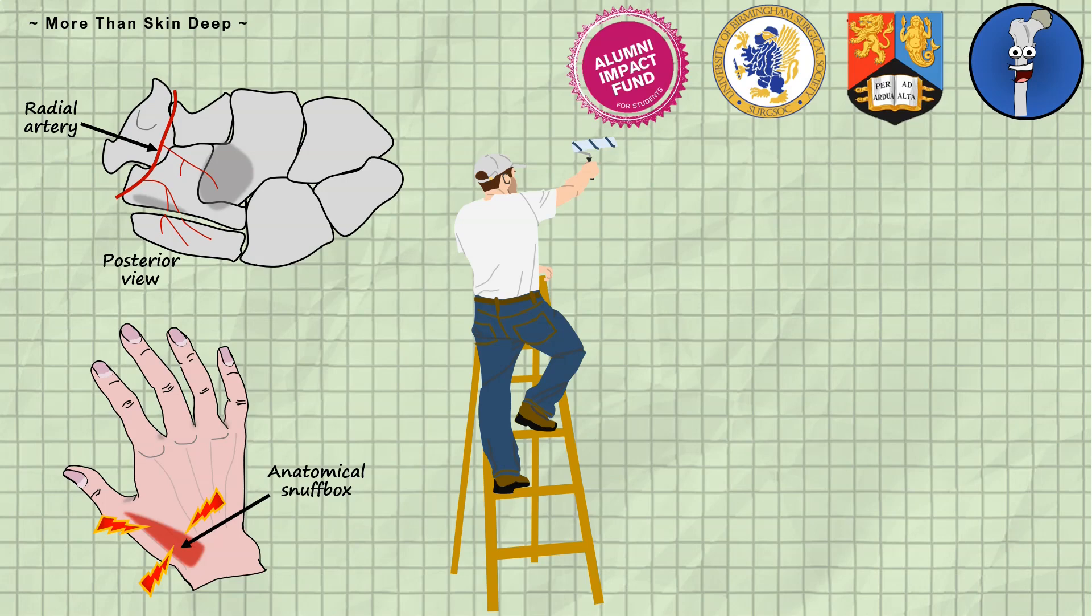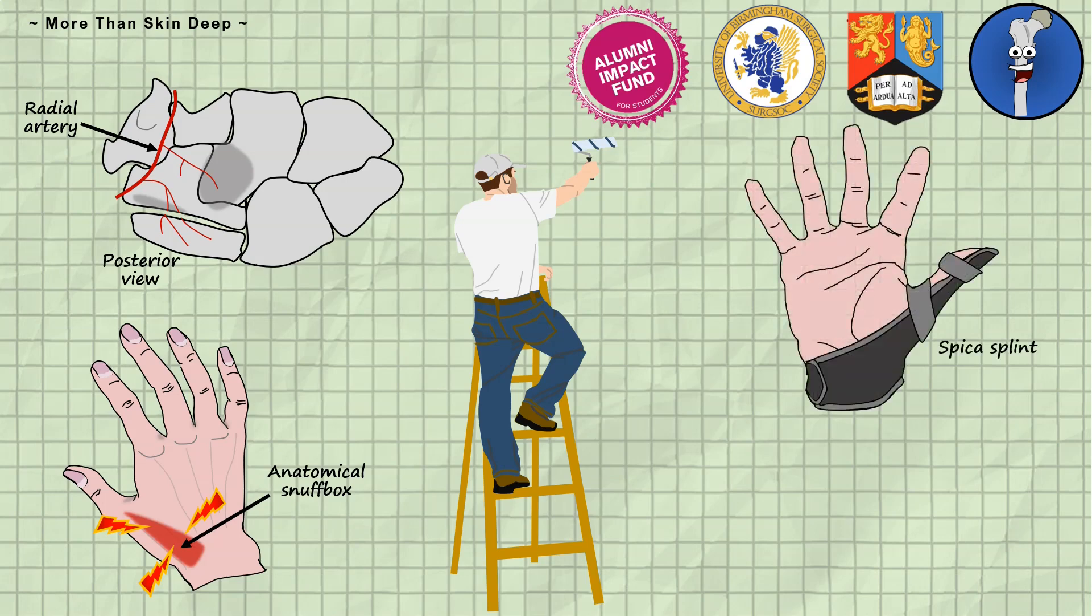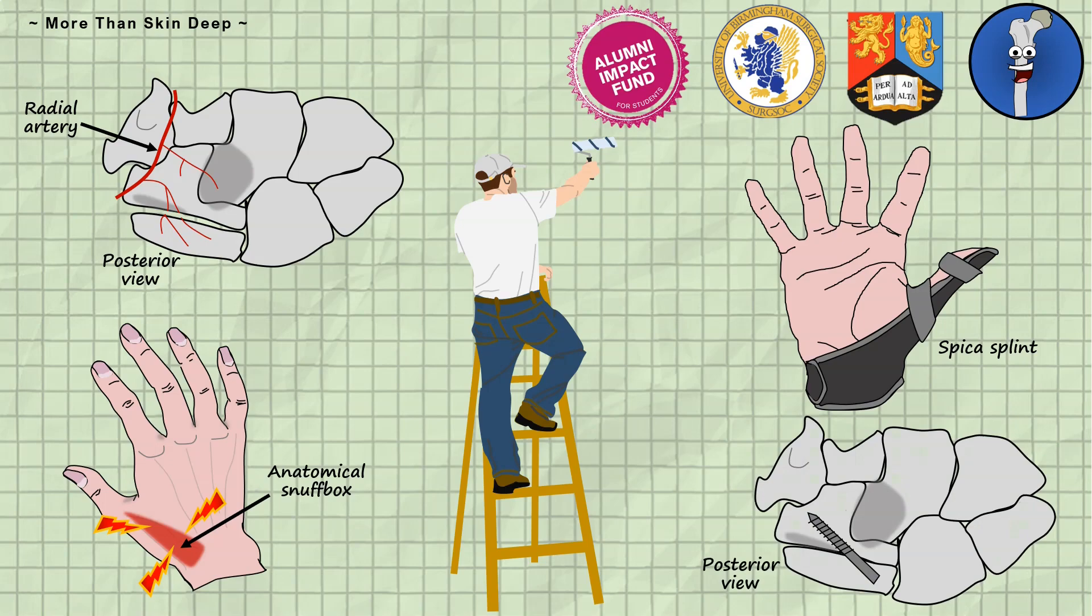Some patients with minor fractures to their scaphoid and a preserved blood supply can be treated conservatively with a speaker splint but more severe cases may need surgical fixation often with a variable pitched headless screw.